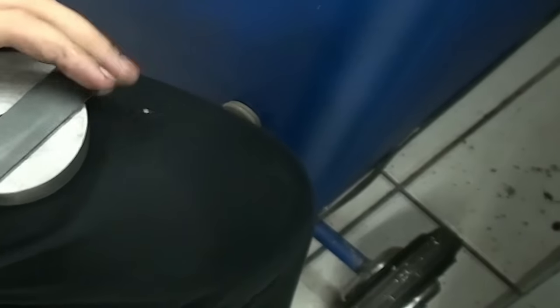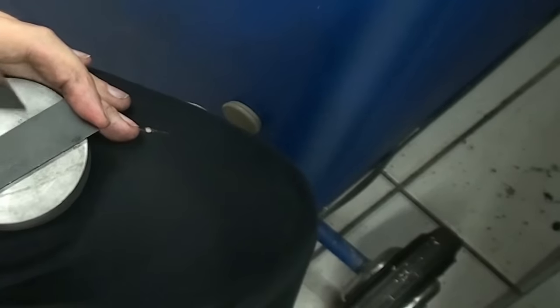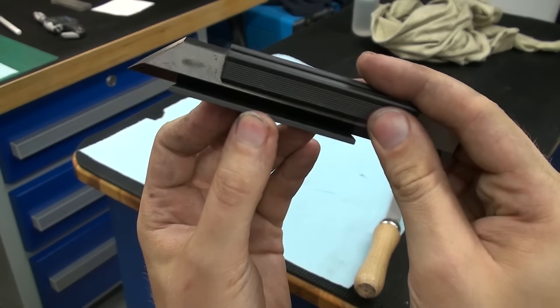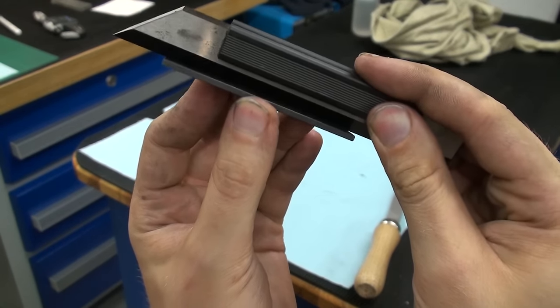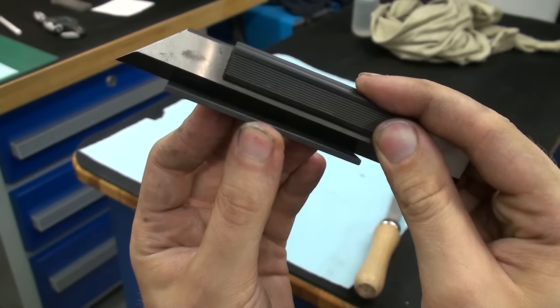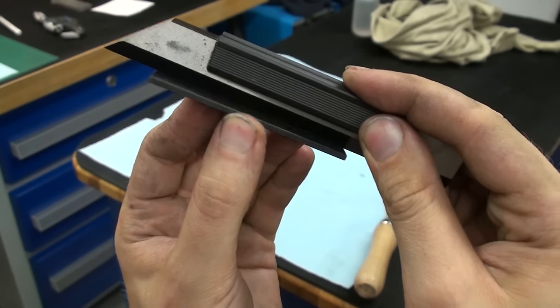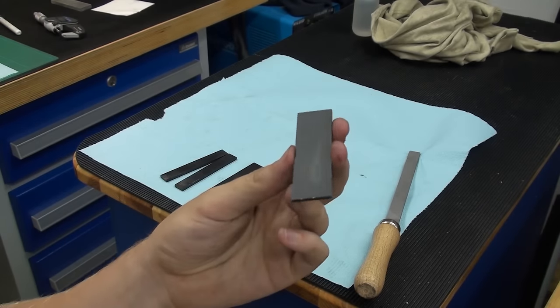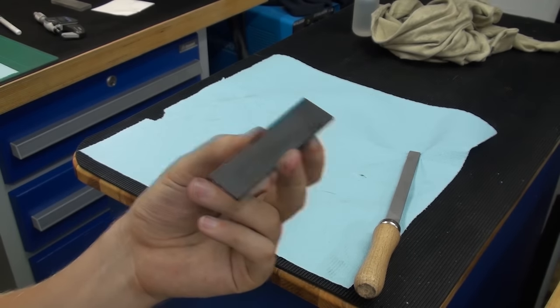And then you check continually how your part is. And I went a bit far. Now it's bent in the other direction. When we take a look through the straight edge, you don't see much of a light gap anymore. Practically, it's straight. So that's the process of straightening a thin heat-treated part.